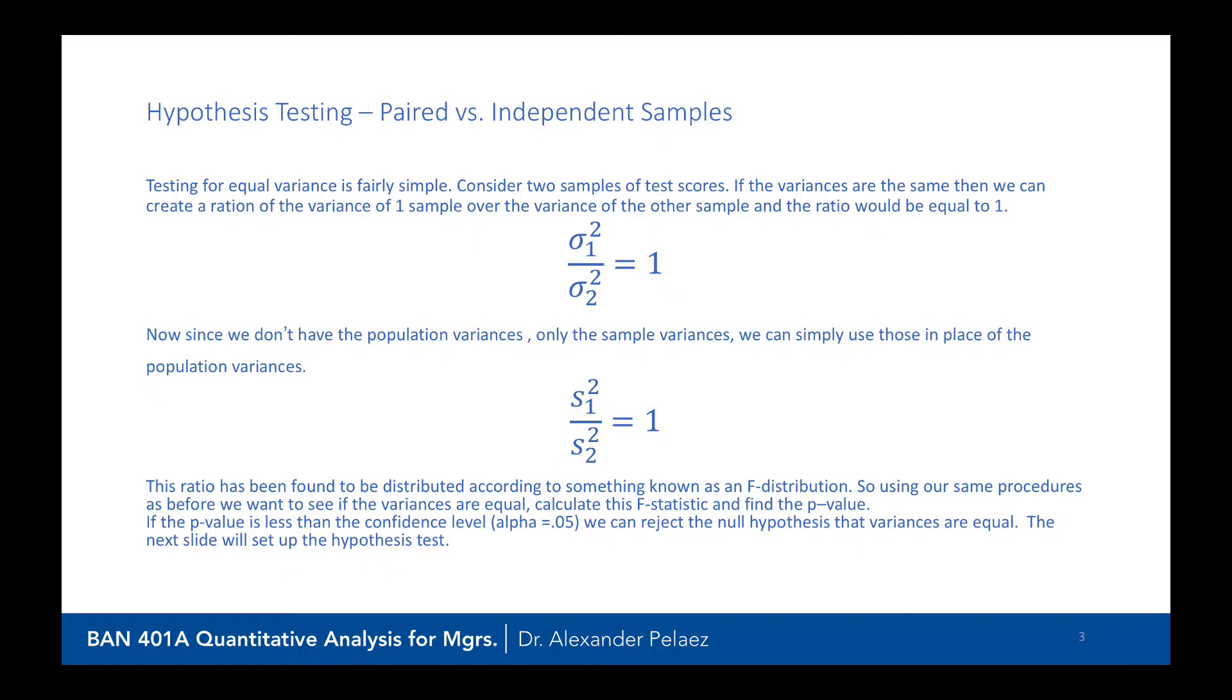And we're going to find the p-value. And if the p-value is less than the confidence level, we're going to reject the null hypothesis that the variances are equal. So our null hypothesis is set up that the variances are equal.